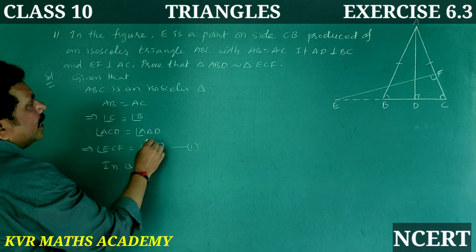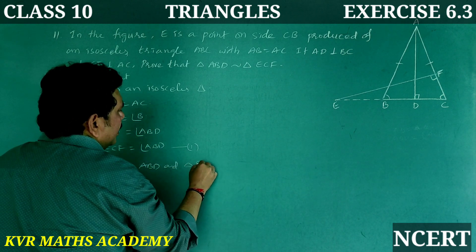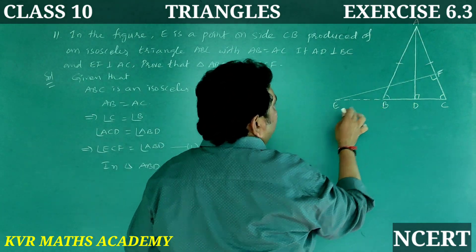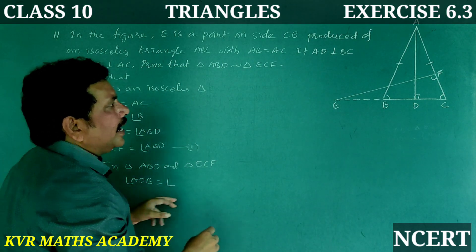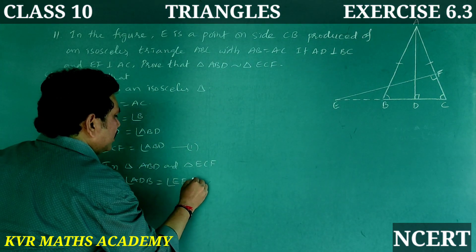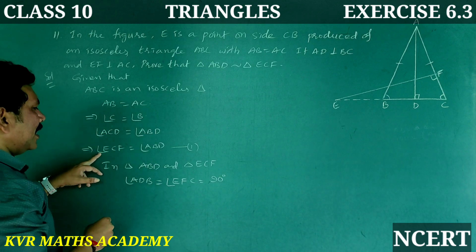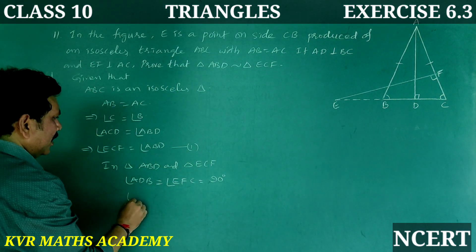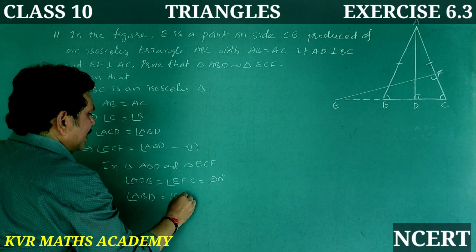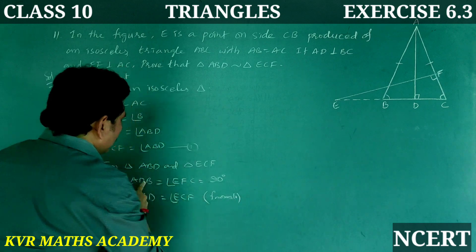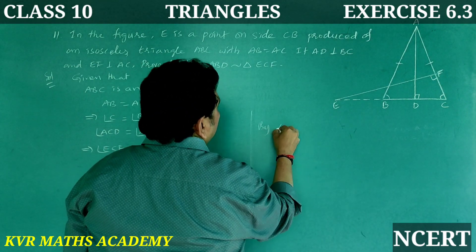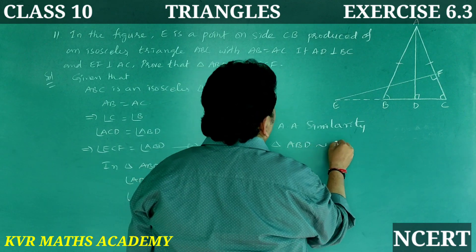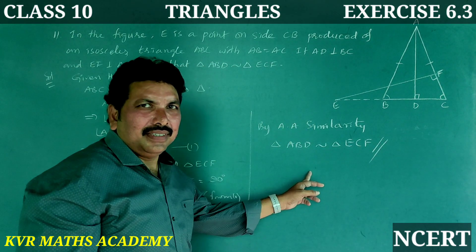Now, in triangle ABD and triangle ECF: angle ADB equals angle EFC, each equal to 90 degrees. And angle ABD equals angle ECF, already proved from equation 1. So by AA similarity, triangle ABD is similar to triangle ECF.